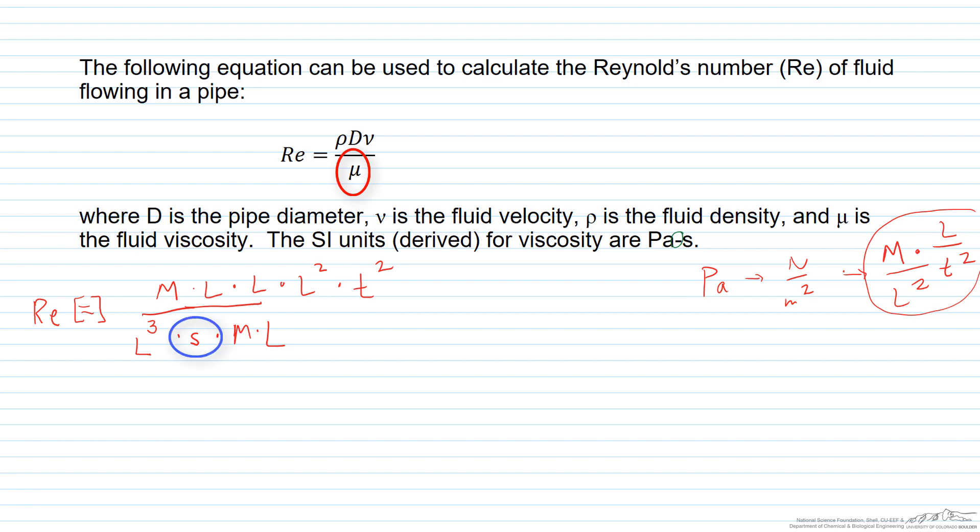And back over here, I wrote velocity as length over S. That should actually be time. So that's a time scale. And I forgot to include this S here. So a Pascal times seconds, we're going to have another time scale there. So we have M is for mass, L for length, T for time.